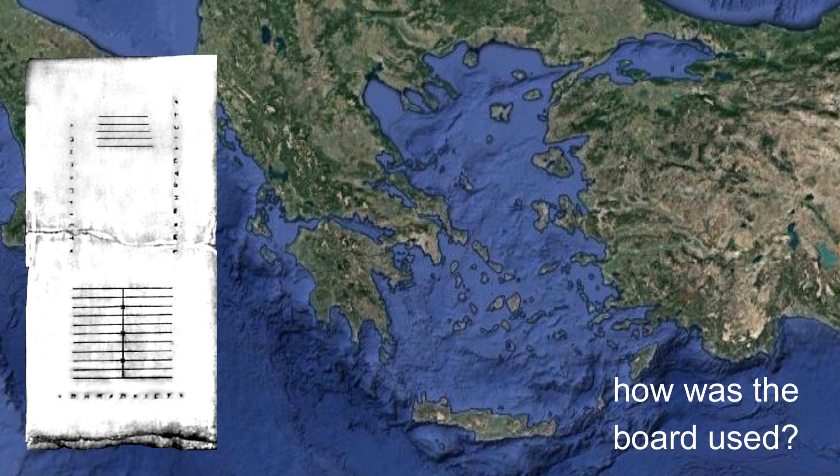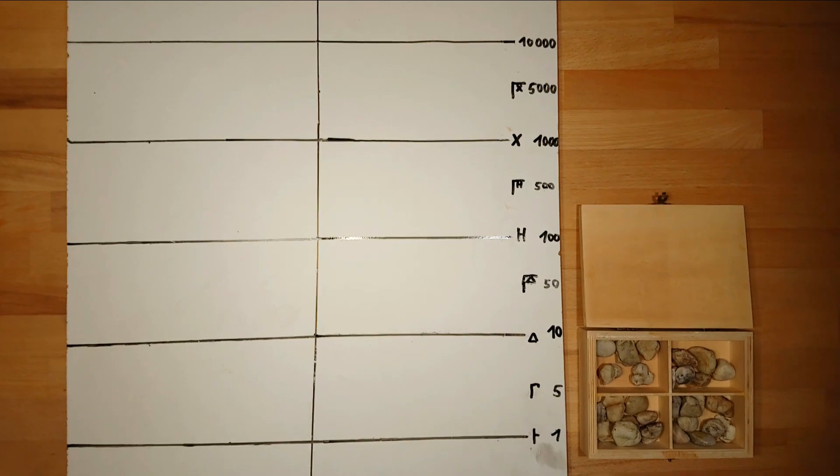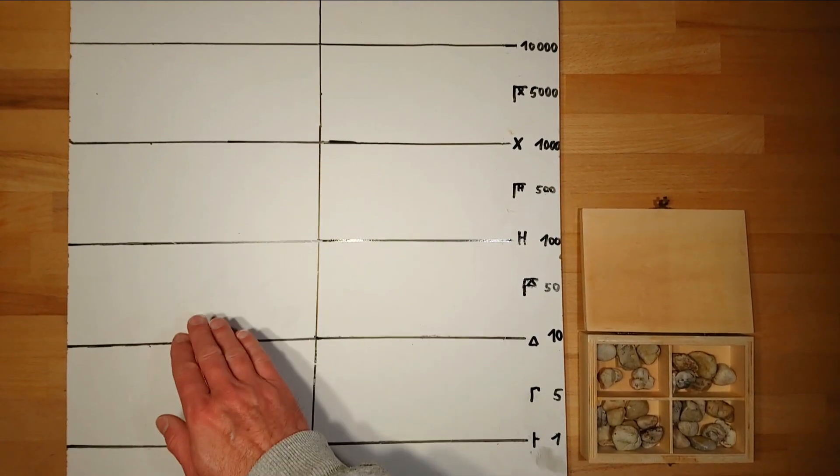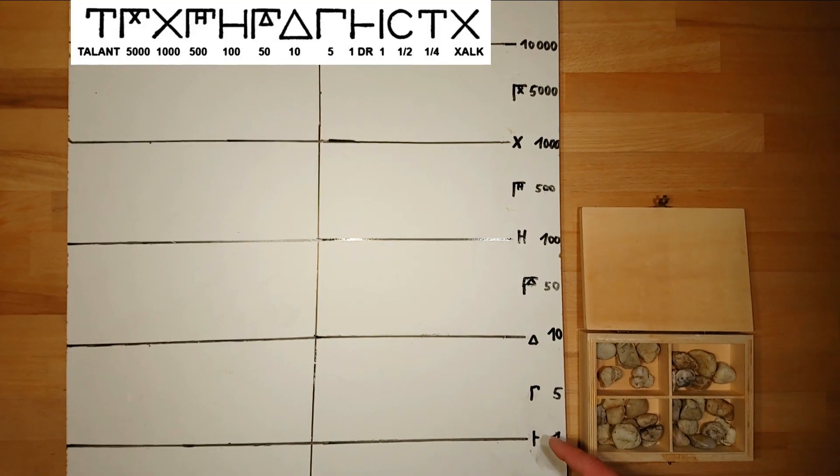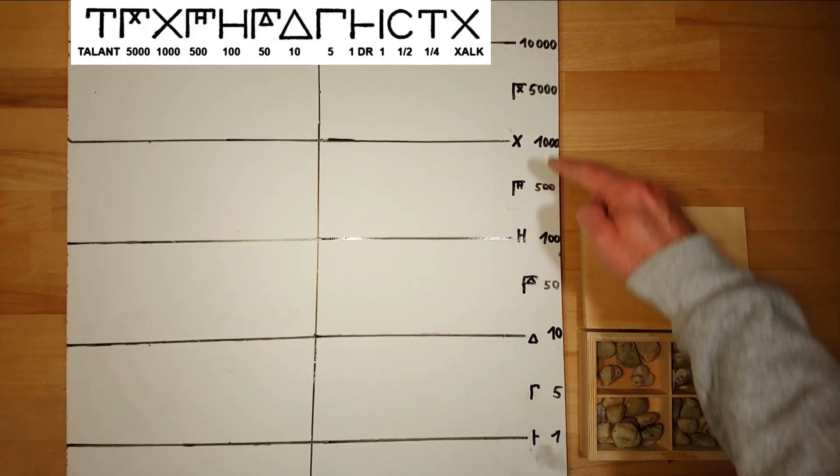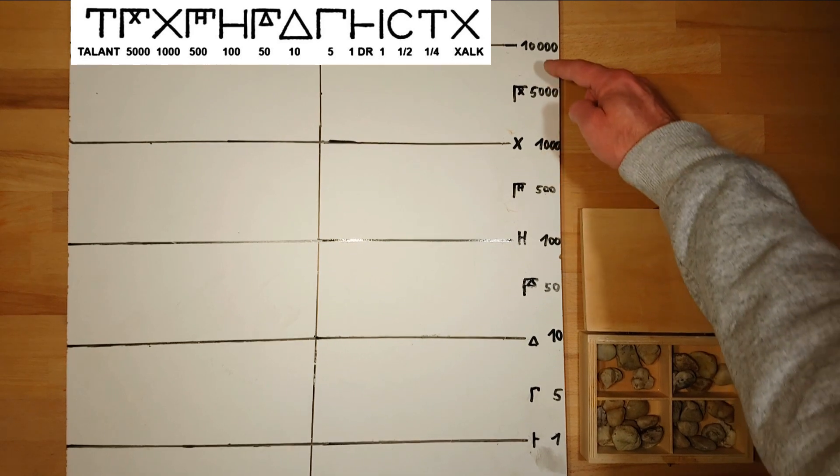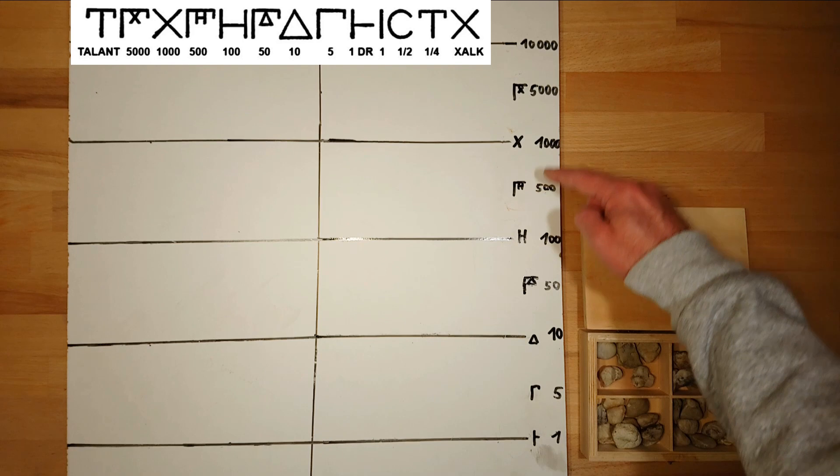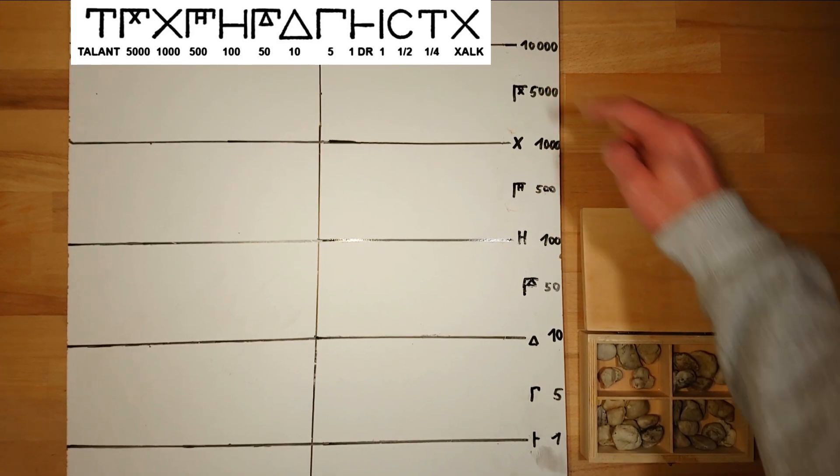So let's see how this counting board most likely was used in ancient times. The board is divided by a vertical line. The right side is for addition and the left side for subtraction. There are also horizontal lines labeled with ancient attic numerals for the decimal places 1, 10, 100 and so on. The spaces between the lines are for 5, 50, 500 and so on.